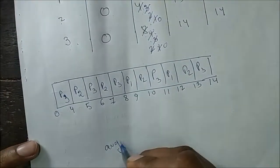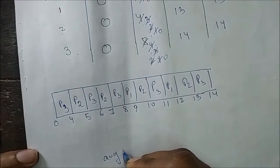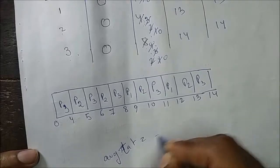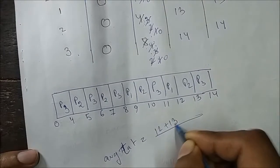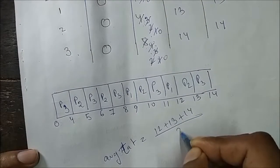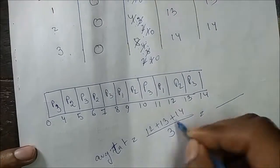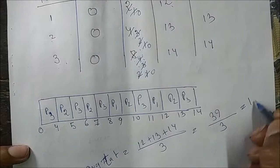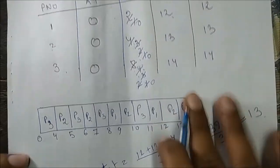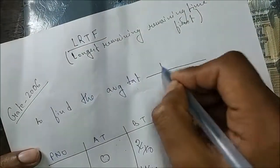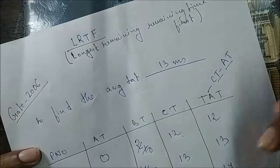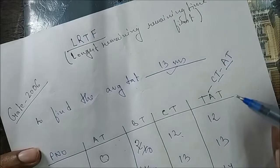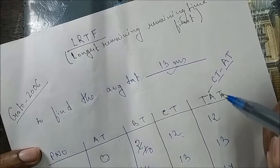The average turnaround time equals (12 + 13 + 14) divided by 3, which is 39 / 3 = 13. So the answer is 13 milliseconds, which matches one of the four given options in the GATE question. Thanks for watching, please subscribe.